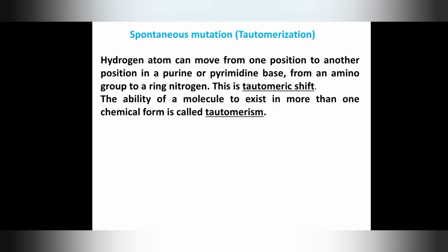Next we have spontaneous mutations. Two types exist: spontaneous mutation and induced mutation. Induced mutation occurs when some external factor forces the mutation to occur. Spontaneous mutation occurs with no external force — it occurs due to a spontaneous phenomenon, also known as tautomerization.